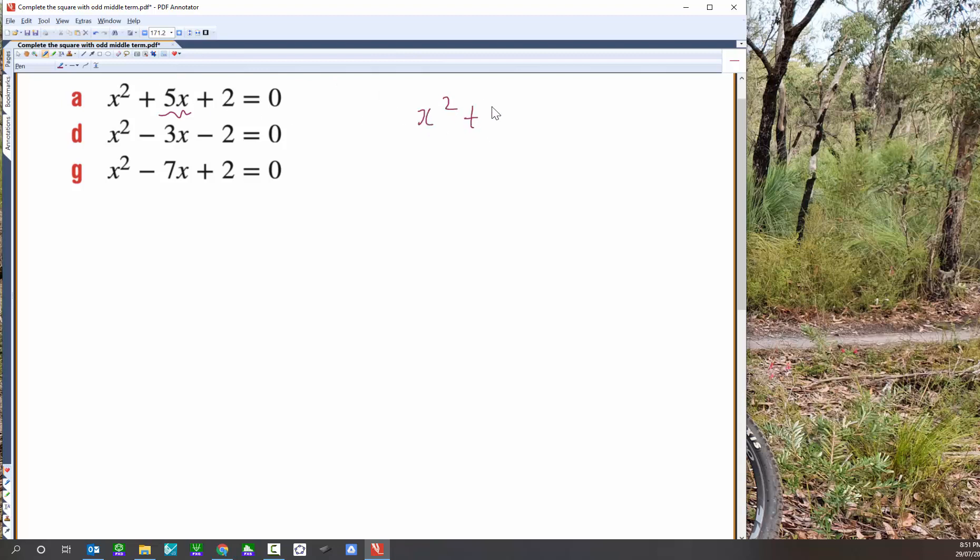So let's focus on x squared plus 5x plus 2 equals 0. So same basic process there. What we're going to do is note that this would be an incomplete square, so to complete the square we'll run the process of saying x squared plus 5x, and what we're going to do is half 5 and square it.